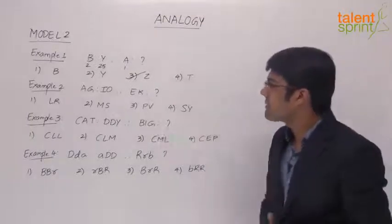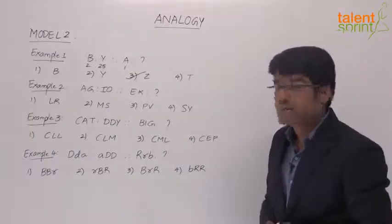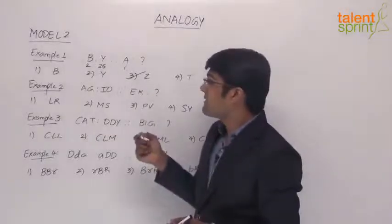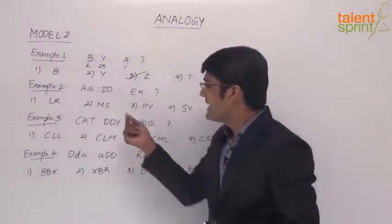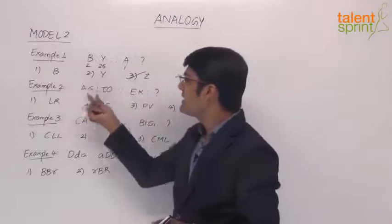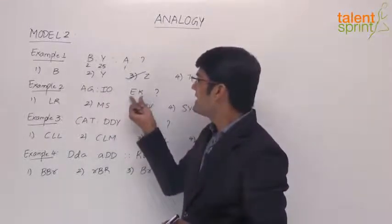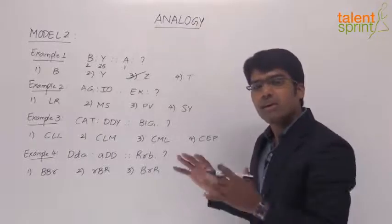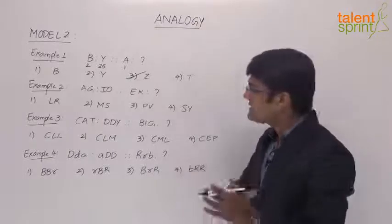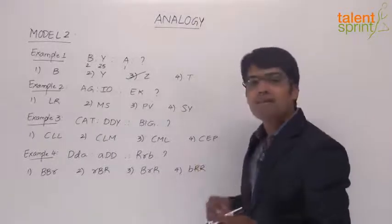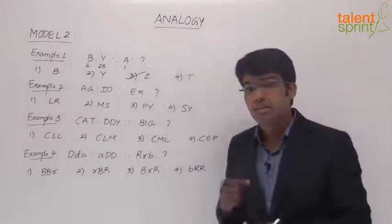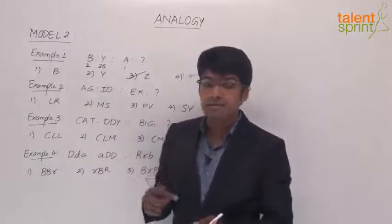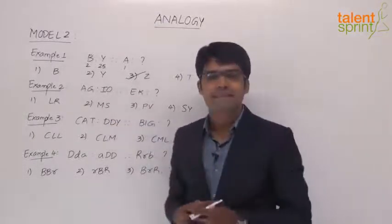Let us now move on to Example 2. Here we have got pairs of letters in every position. AG is related to IO. Then EK is related to what? Without worrying about anything else, just try to understand the logic in the positions. The logic is not based on the letters themselves — the logic is based on the positions of these letters.